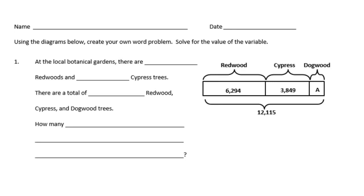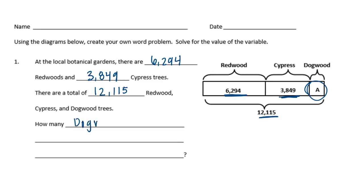For number one, at the local botanical gardens there are 6,294 redwood trees and 3,849 cypress trees. The total of redwood, cypress, and dogwood trees is 12,115. The variable A represents the number of dogwood trees at the local botanical gardens.